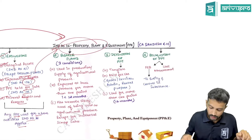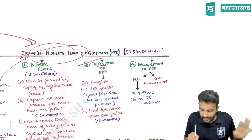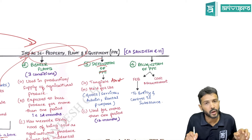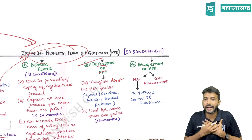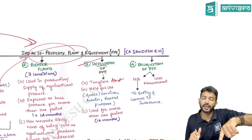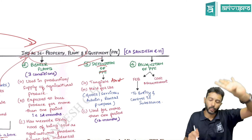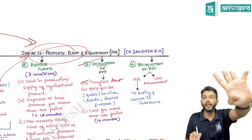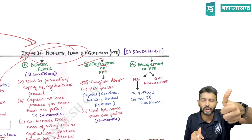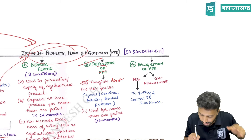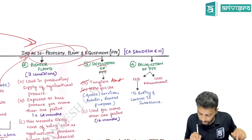To call something PP, there are three characteristics. One: it should be a tangible asset — an economic resource controlled by the entity from which future benefits flow while restricting others. Two: it should be held for use — either to produce goods, render services, for administrative purposes, or for rental. Three: the period of usage should be more than one period, i.e., more than 12 months.